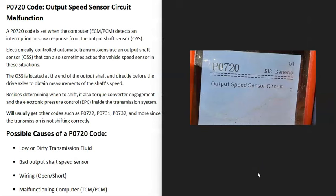Today I'm talking about a P0720 code, what it is and how you go about fixing it. A P0720 code is an output speed sensor circuit malfunction.